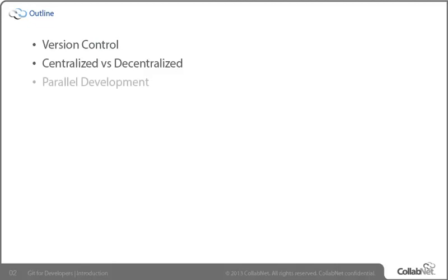Thirdly, one of the key elements of version control is parallel development. Some of that is accomplished through branching, but what we want to look at here in the introduction is the other side — the situation where you and I need to affect the same file for roughly the same purpose, and we want to do that without one of us clobbering the other one's work.